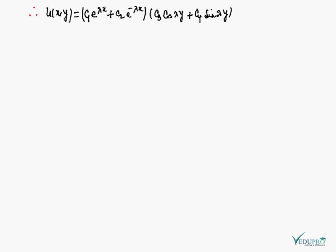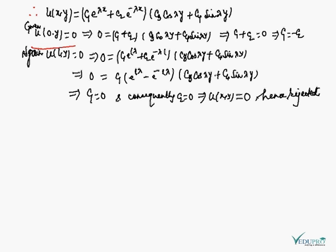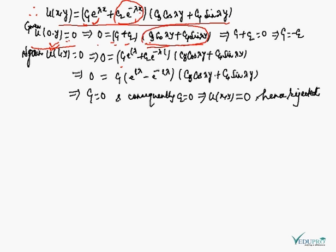Applying BC1: u(0,y) = 0. Substituting x = 0: (c₁ + c₂)[c₃cos(λy) + c₄sin(λy)] = 0. Since the bracket in y is not zero, we get c₁ + c₂ = 0, which implies c₁ = −c₂.